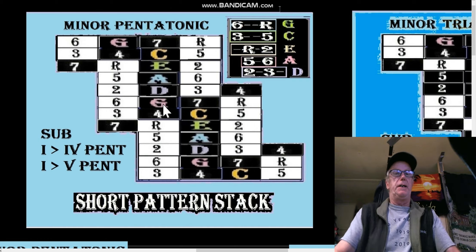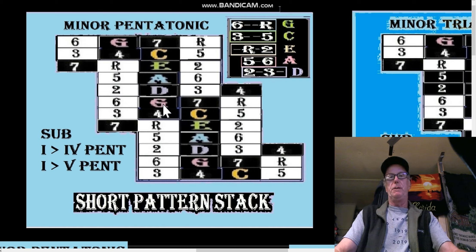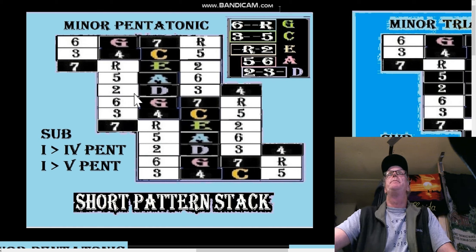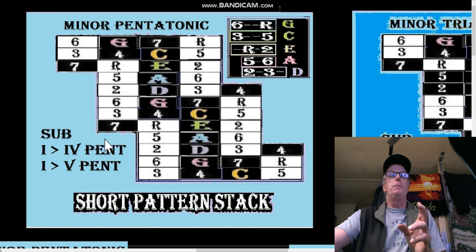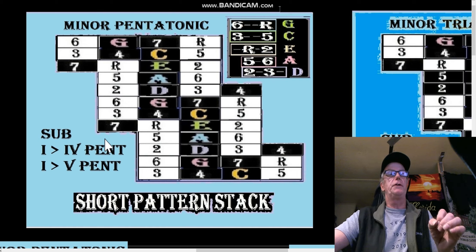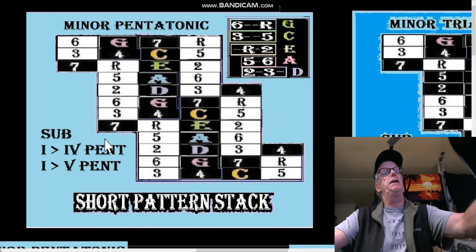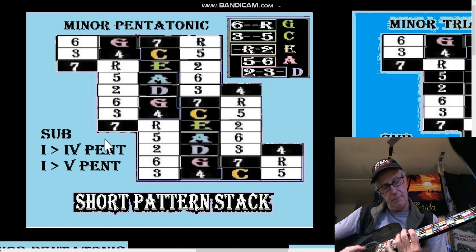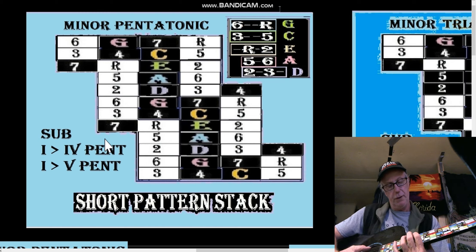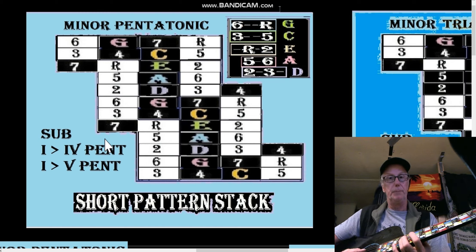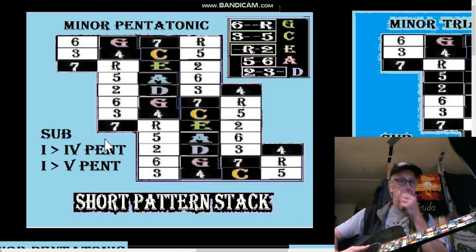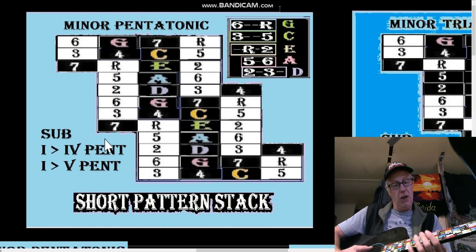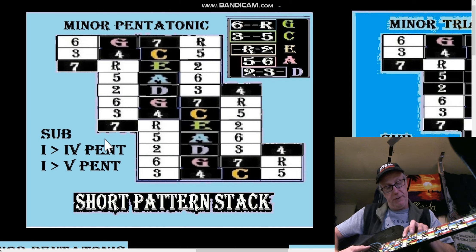The minor pentatonic is pretty much the same as the major pentatonic. The bottom line difference is to start the pentatonic scale from the note that you want to start it from. So if we've got a C pentatonic here, let's start it from C — it's root, two, three, five, six, root. If we want to start an A pentatonic, we start from A, just in a different position.